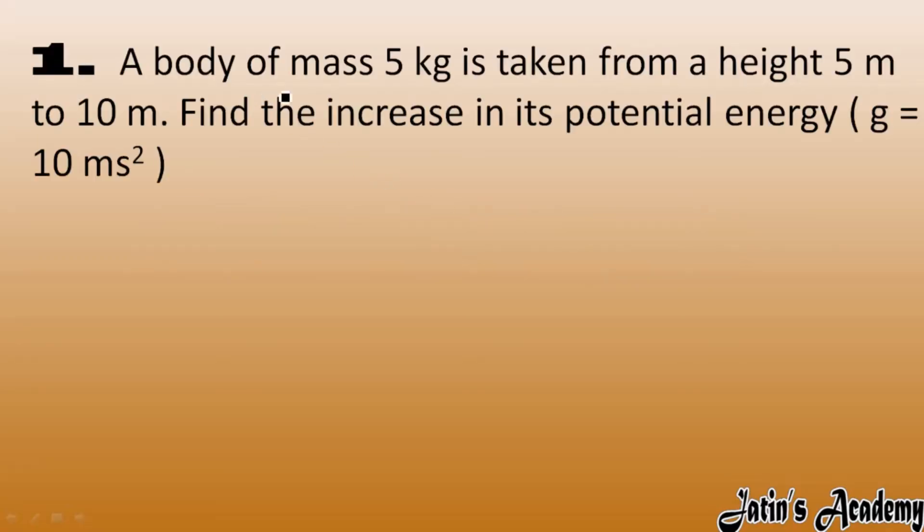A body of mass 5 kg is taken from a height of 5 meters to 10 meters. Find the increase in its potential energy. The g value is given as 10 meters per second squared.